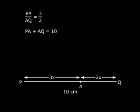is 10 cm. PA is 3X, AQ is 2X. So 5X is 10 cm and X is 2.